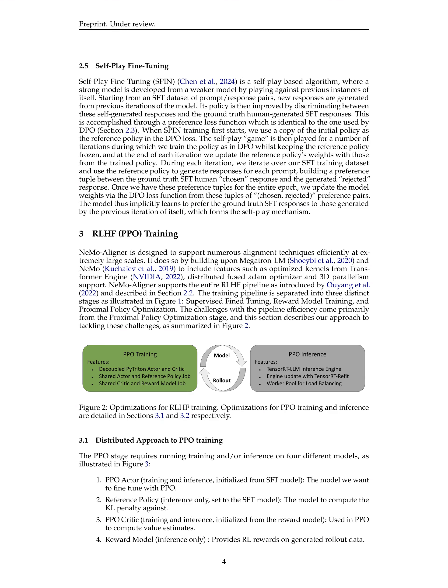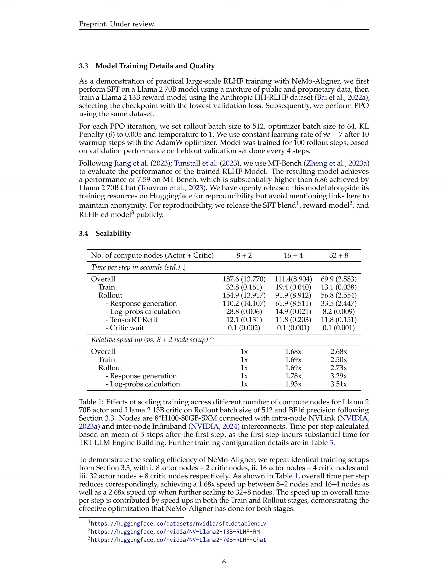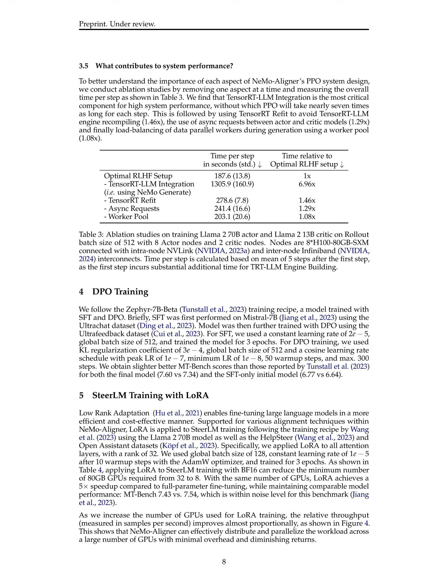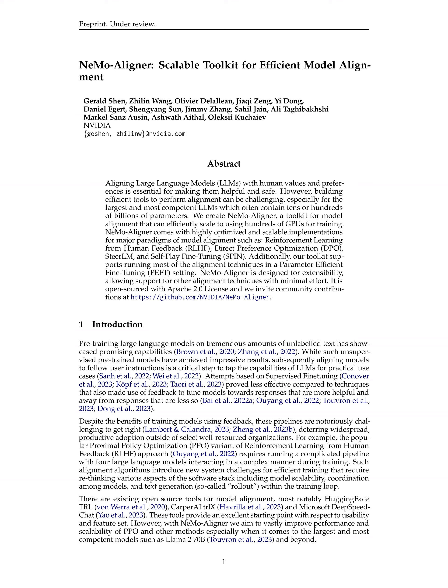The method also supports various alignment techniques efficiently at extremely large scales, providing features like optimized kernels, distributed fused Adam optimizer, and 3D parallelism support. Additionally, NEMO Aligner demonstrates scalability by achieving speed-ups in both the training and rollout stages when scaling the number of compute nodes. The system design — including TensorRT-LLM integration, async requests between actor and critic models, and load balancing of data parallel workers — contributes to high system performance, improving scalability and efficiency in alignment techniques for practical applications.